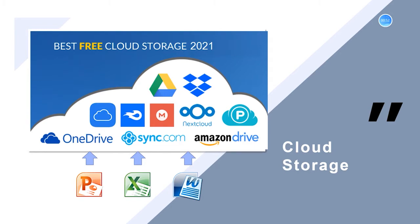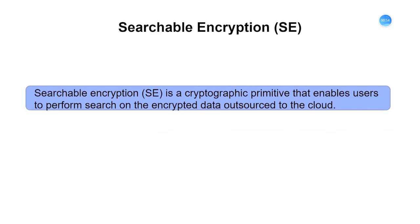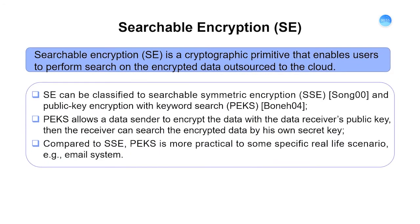To solve the problem of encrypted data search, searchable encryption was first proposed by Song et al., to enable users to perform search on encrypted data outsourced to the cloud. Generally speaking, searchable encryption schemes can be divided into two categories: searchable symmetric encryption (SSE) and public key encryption with keyword search (PEKS).